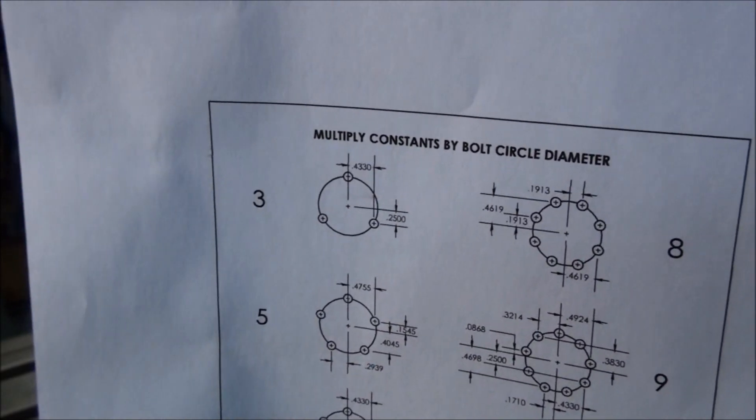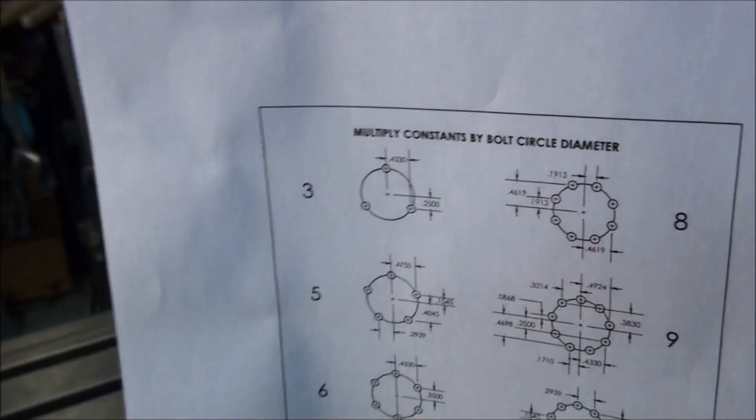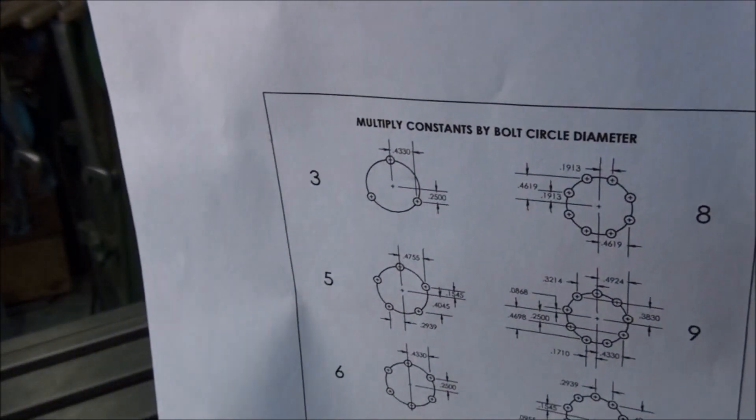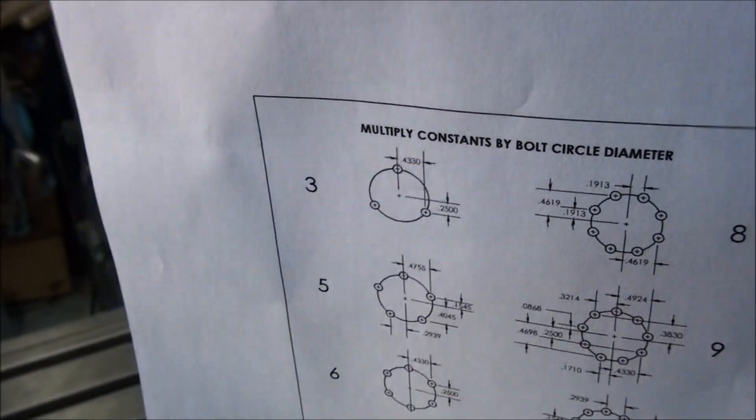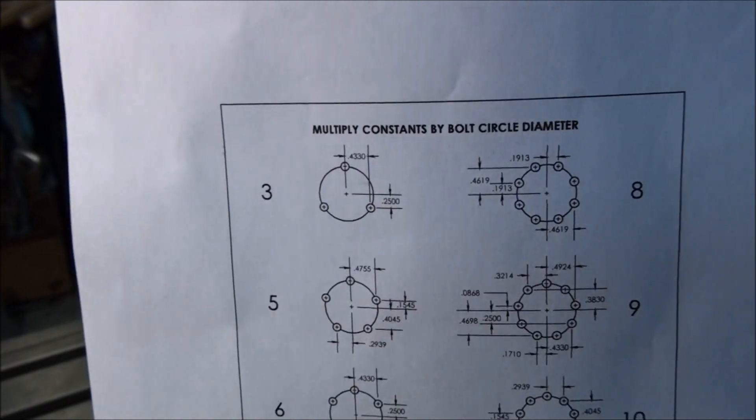If you want to use them on a different sized bolt circle, like in this case, one and seven-eighths on our part here, or half-inch or three-quarter, whatever you want, all you got to do is multiply those constants by the diameter of your pitch circle or your bolt circle. Real easy to do.